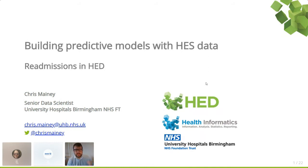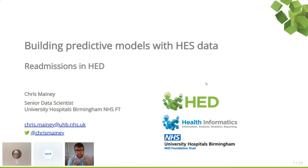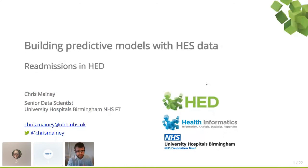I'm going to talk about case mix adjustment first — what it is and why you'd do it. Then a specific example of how we do it for readmissions, the problems we have and some solutions. Then I'll talk about how we make it work on desktop machines, and give you some background on how we got here, because we didn't simply start by writing production grade R code — there was a journey.